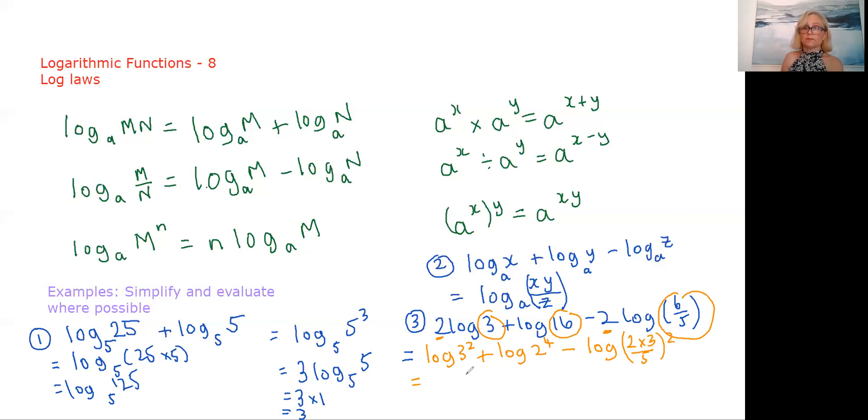All right, when we put it all together, we're going to be multiplying these two and we're going to be dividing by this. So we're going to have 3 squared times 2 to the 4th dividing by this. So we're going to divide by 5 squared, and we're going to—in fact, sorry—we're going to divide by our 2 squared and our 3 squared, and we're actually going to multiply by that 5 squared because we're dividing by a fraction.